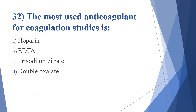Thirty-second question: the most used anticoagulant for coagulation studies is. Option A: heparin. Option B: EDTA. Option C: trisodium citrate. Option D: double oxalate. Answer is option C, trisodium citrate.